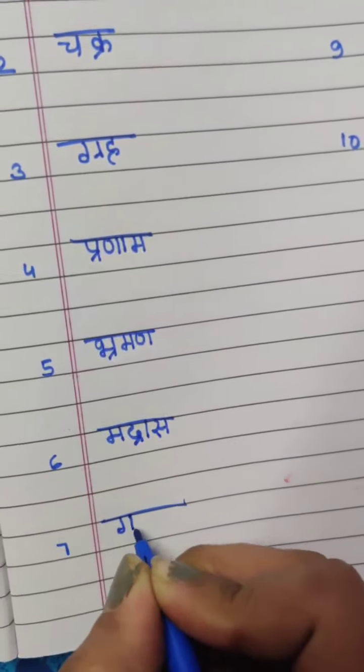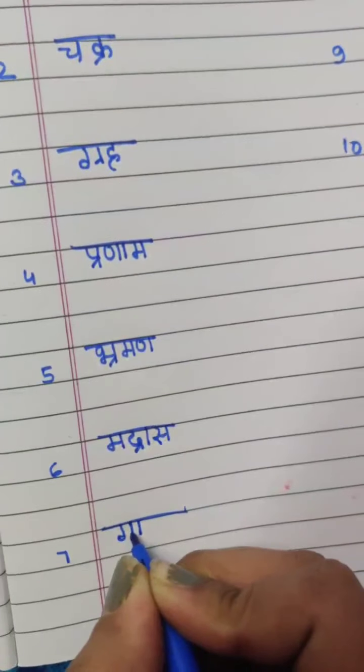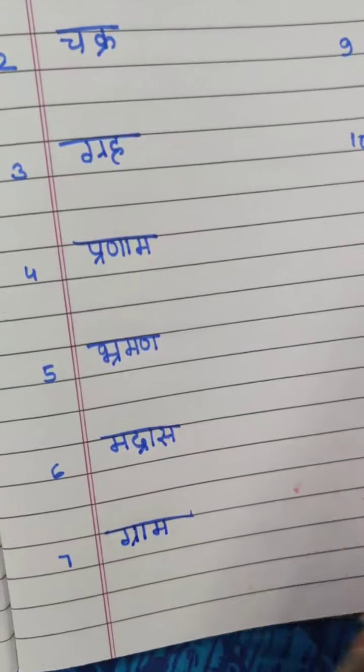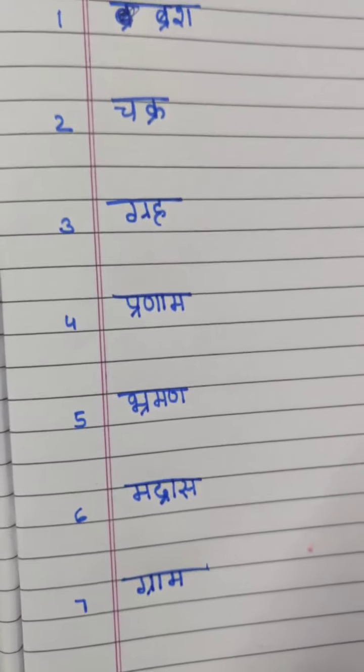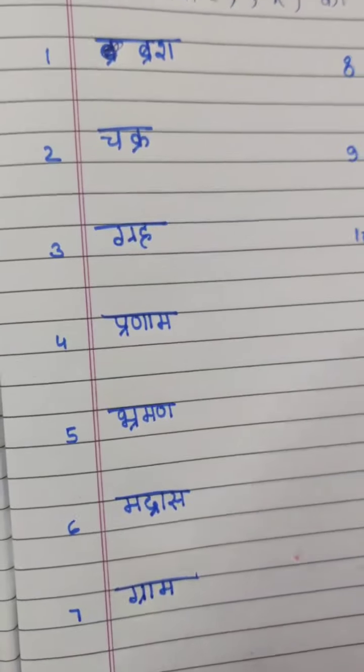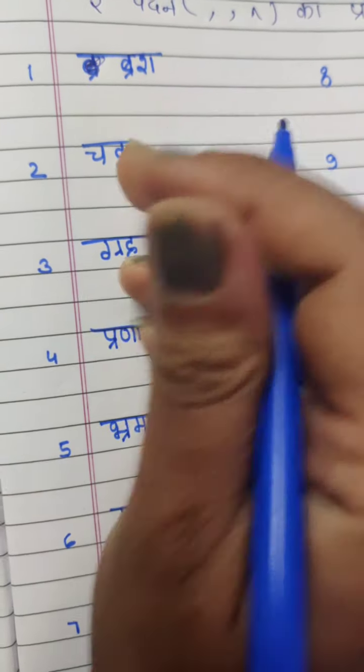And the seventh one, G, G mein Aaki matra and also Padeen ki matra and Ma, Gram. In standing line letters, we put Padeen ki matra like this.